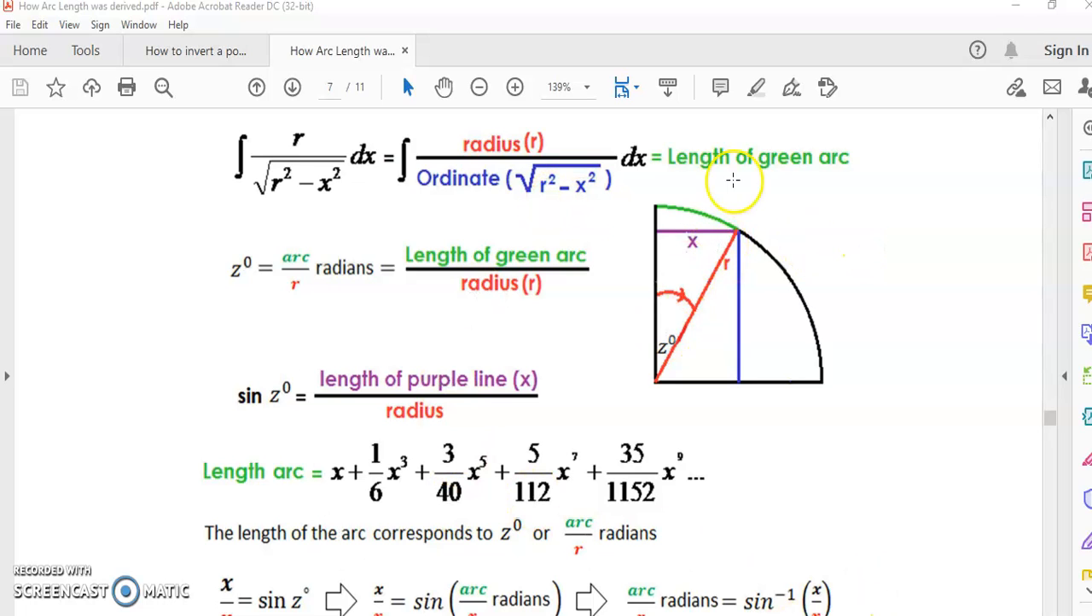You might recall that Newton used this x ordinate here and not the blue one. He could have used either because this arc length here has the same measure as this angle, and this angle has the same measure as this arc length here.